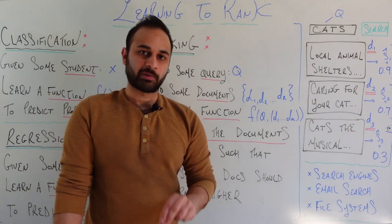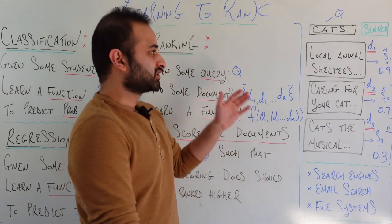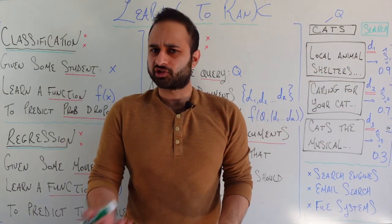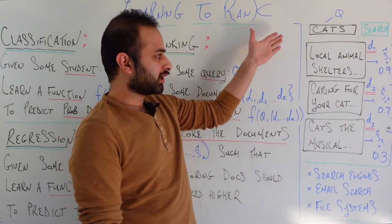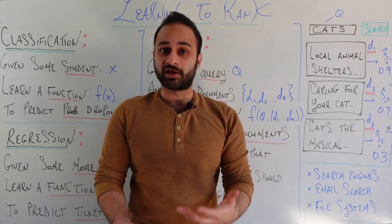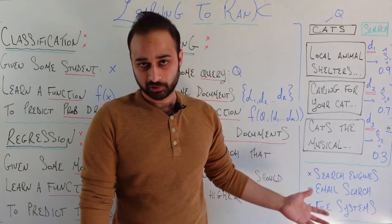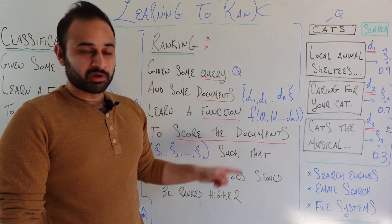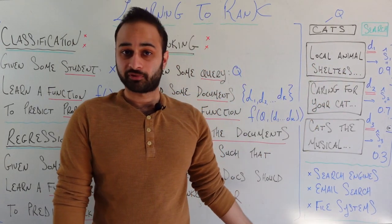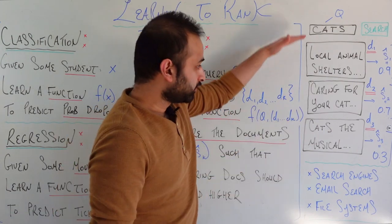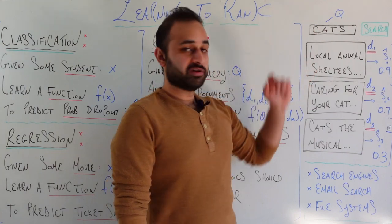Let me explain it in a more human-understandable way. Say you're designing the world's first search engine for animal lovers, and someone types in the query 'cats' — a search they might have. They hit the search button and get a populated list of documents: one on local animal shelters, one on caring for your cat, and one about Cats the musical. Our learned function outputs a score for each: 0.9 for the first, 0.7 for the second, and 0.3 for the last. These scores are used to rank the documents because higher scores align with documents more relevant to the user's query.